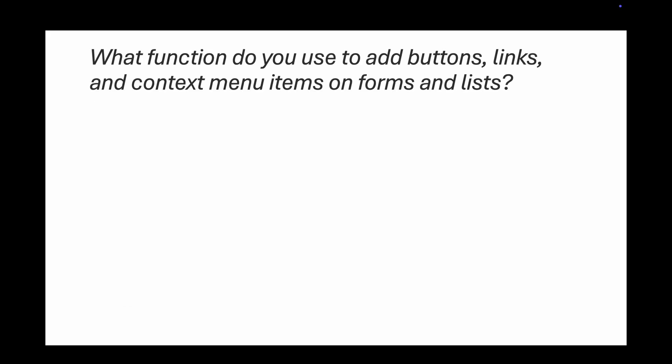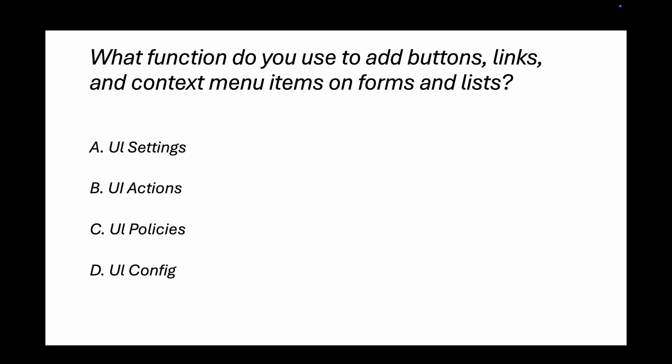Question 3: What function do you use to add buttons, links, and context menu items on forms and lists? Options are UI Settings, UI Actions, UI Policies, and UI Config. To add buttons, links, and context menu items you use UI Actions — that's the correct answer.